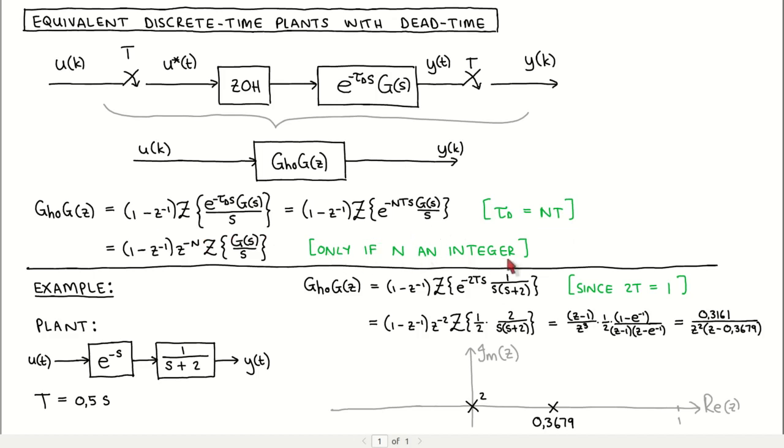For the case where n is an integer, e to the power n T s corresponds to the delay of n sampling periods. We can now use the delay property of the z transform to write the z transform of the transfer function with the delay as z to the power minus n times the z transform of the transfer function without the delay. We therefore add a pole at z equal to zero for each sampling period the delay present in the plant.